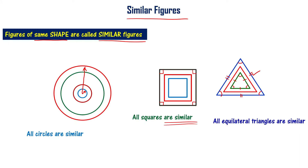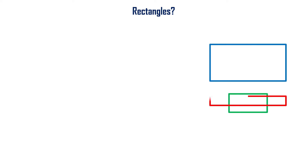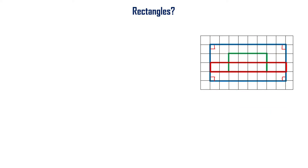Now, consider rectangles. You can have rectangles of different shapes — a rectangle can be wider or narrower. Because rectangles can differ in proportions, not all rectangles are similar.